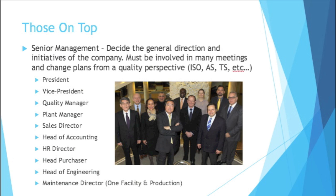Senior management also includes the quality manager, plant manager, sales director, head of accounting, HR director, head purchaser, head of engineering, and a maintenance director. Typically you'll have a facility maintenance director and a production maintenance director — facility maintenance dealing with things like lights, tables, and walls, and production maintenance dealing with the machines and equipment.